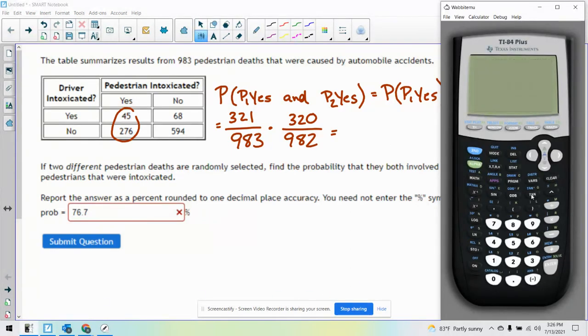you should get 321 divided by 983 times 320 divided by 982. We get 0.1064, or rounded to one decimal place, 10.6%.